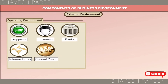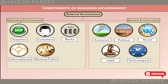Examples of Operating Environment are Suppliers, Customers, Banks, Intermediaries, and General Public. Examples of General Environment are Economic Environment, Political Environment, Social Environment, Legal Environment, and Technological Environment.